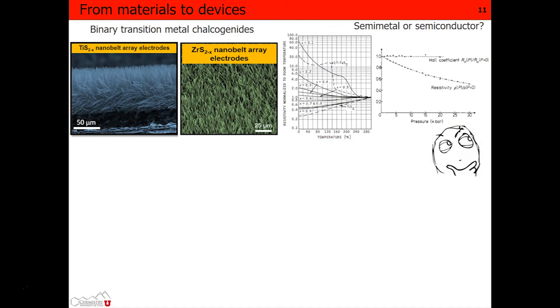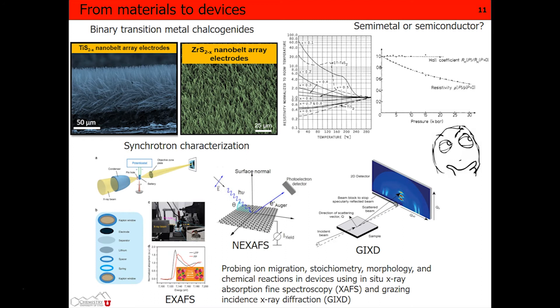We use a suite of characterization to do that, synchrotron characterization where we look at the coordination and bond distances of these materials, the changes in oxidation state, morphology, and the electronic properties of these systems. In operando means while they are assembled in a battery.